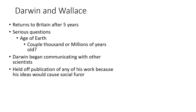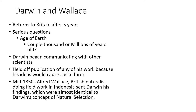Darwin was pushed to publish his ideas because of another scientist. In the mid-1850s, Alfred Wallace, another British naturalist who did field work in Indonesia, sent Darwin his findings. Wallace's findings were almost identical to Darwin's concept of natural selection. This lit a fire under Darwin because he knew that if he didn't publish his work now, Wallace would publish his and get the credit. As Darwin wrote back to Wallace: 'All my originality will be smashed.' Egos do matter in science.